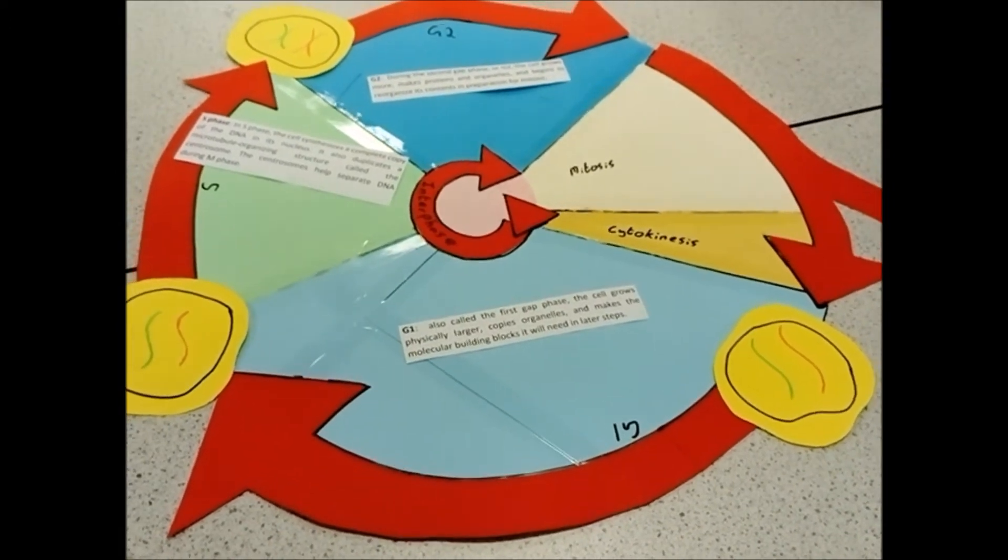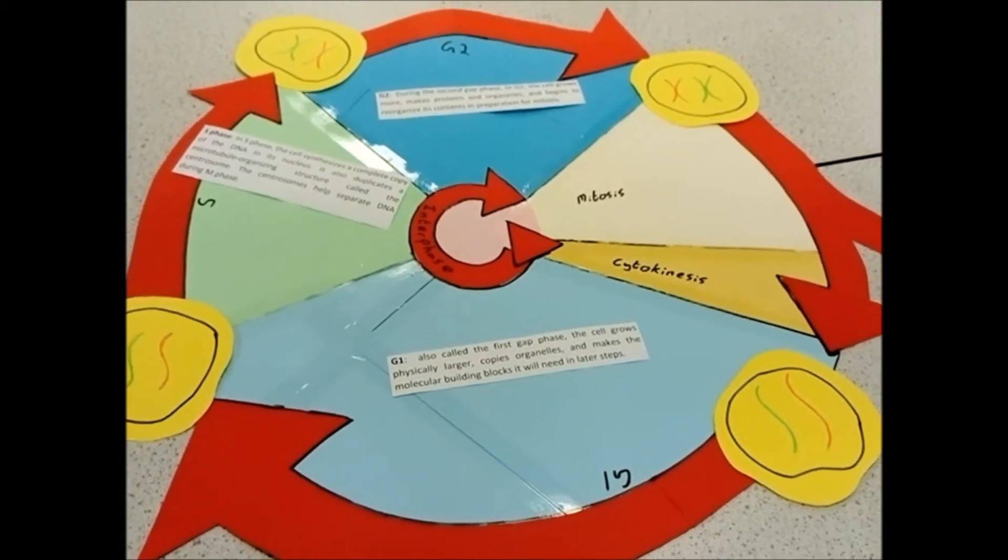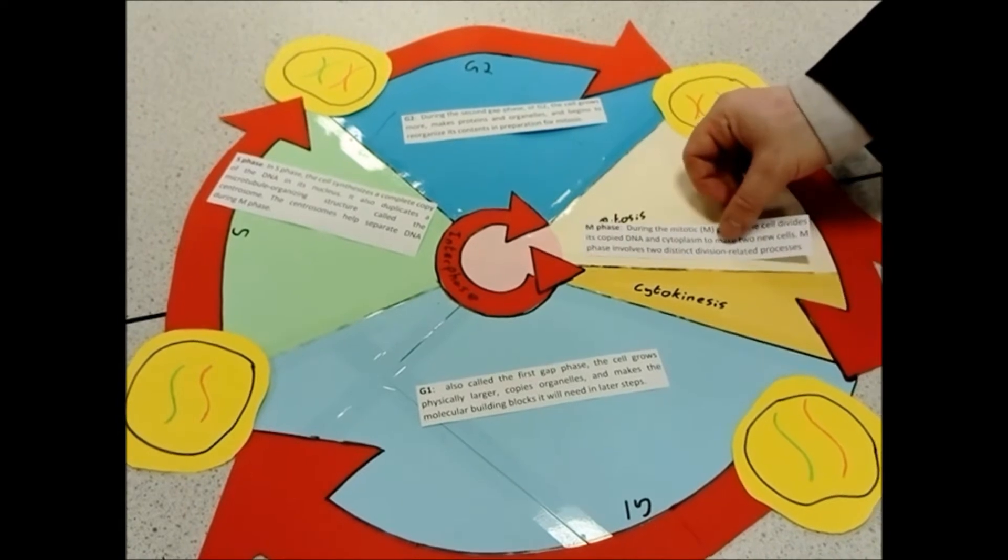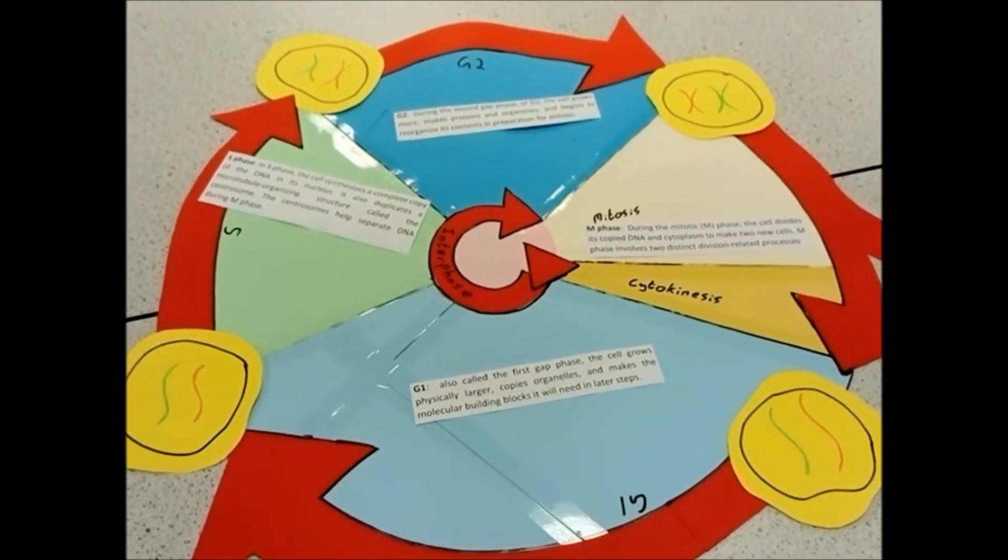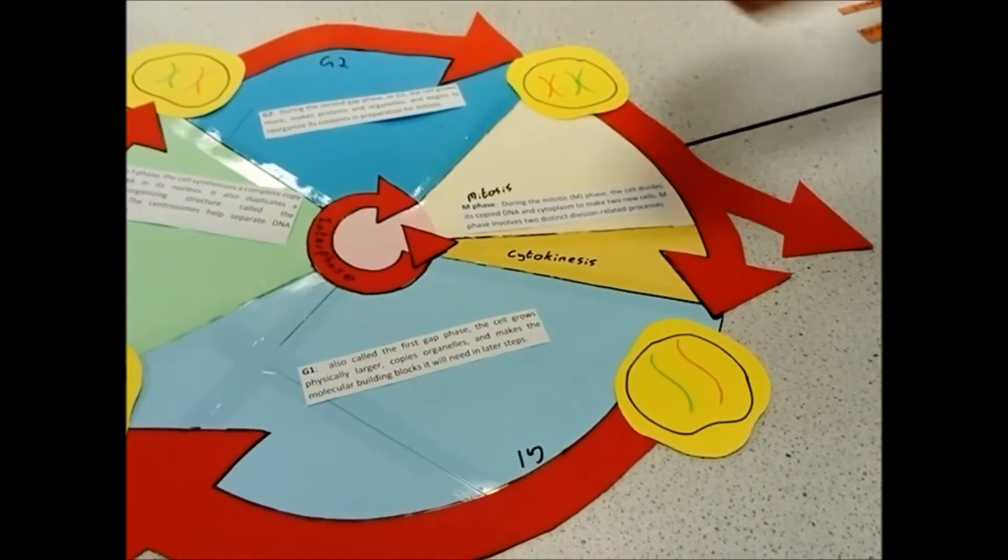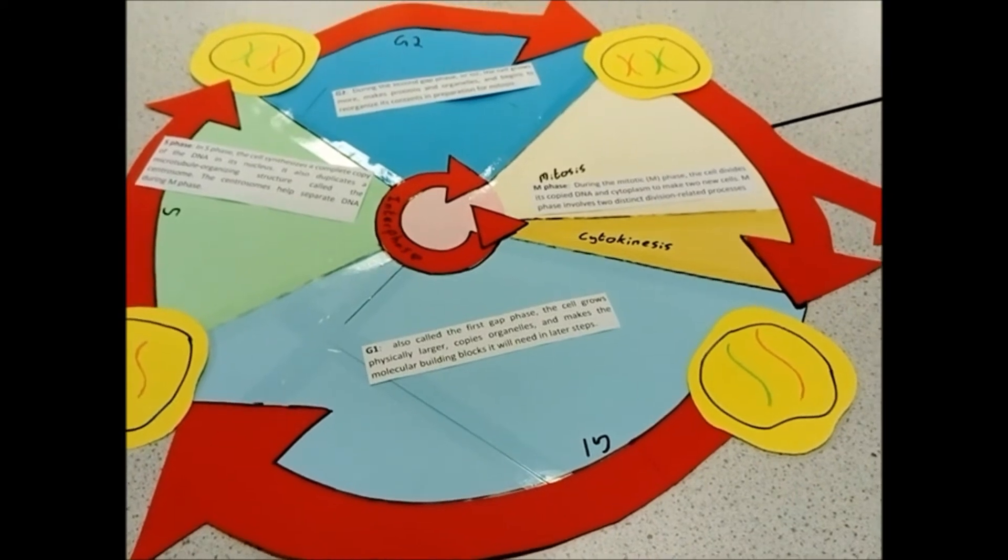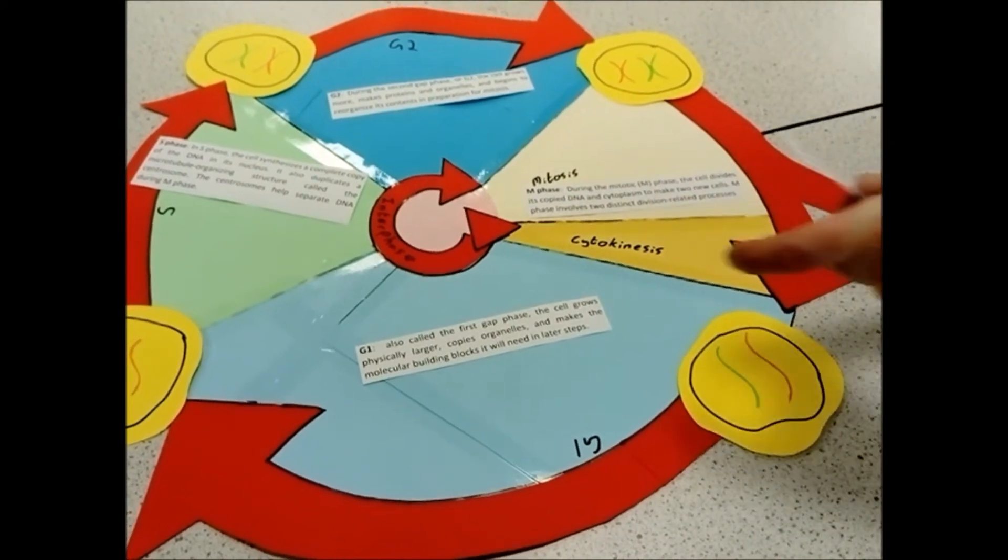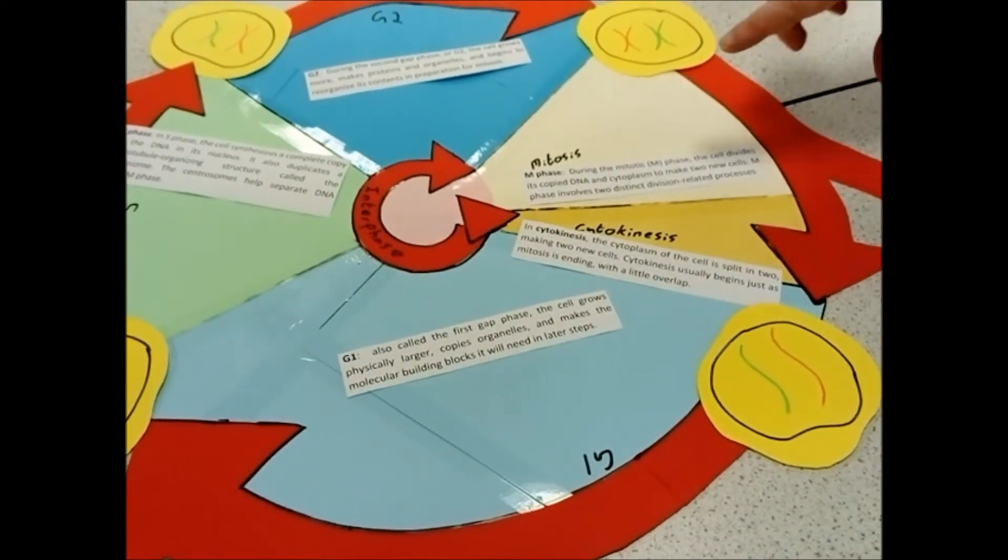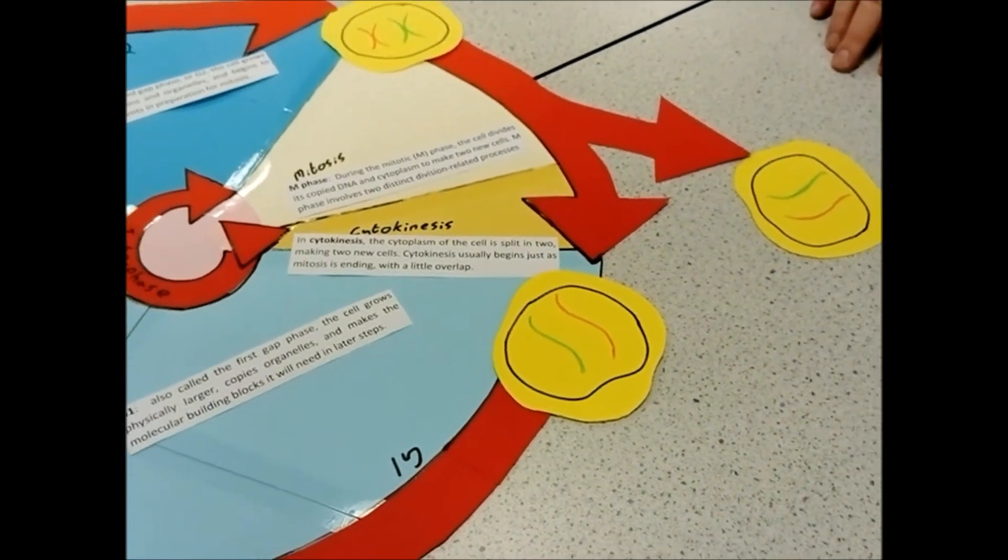At the end of the G2 phase, we move into your M phase. Your M phase, or your mitotic phase, is where your mitosis is going to happen. It's where the DNA is going to get pulled apart, and you're going to get cell division happening during cytokinesis. Cytokinesis is the one cell splitting into two cells.